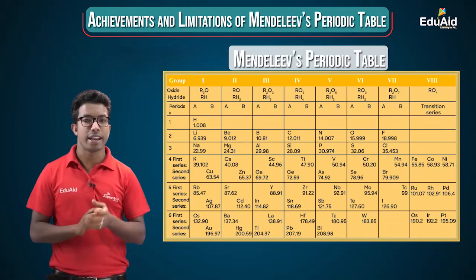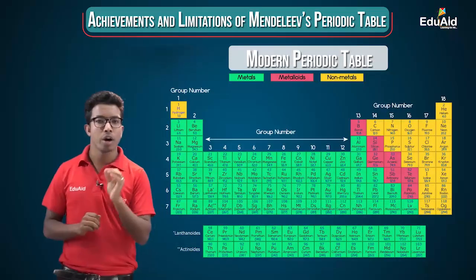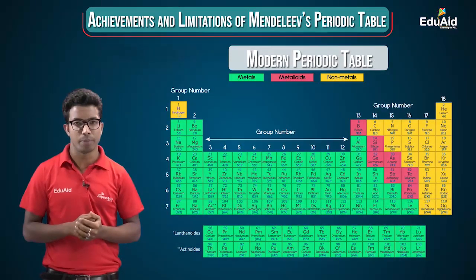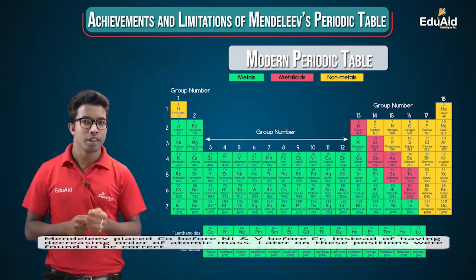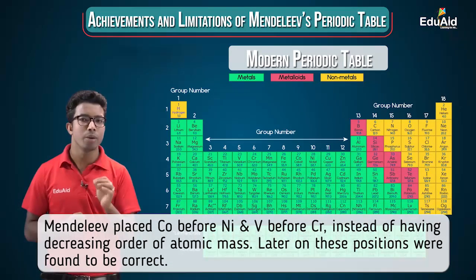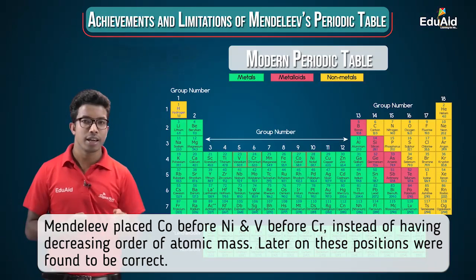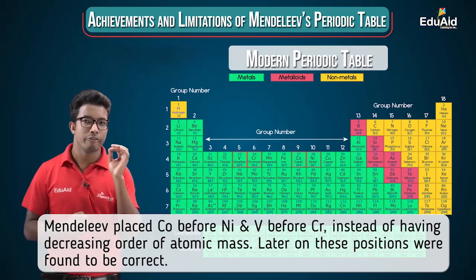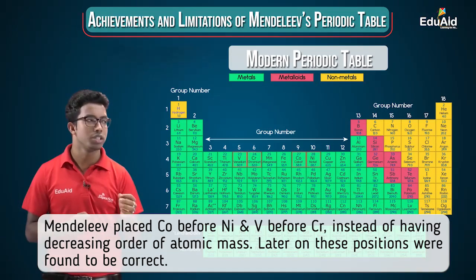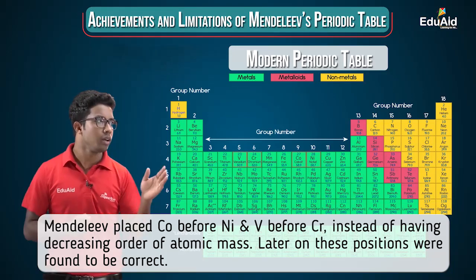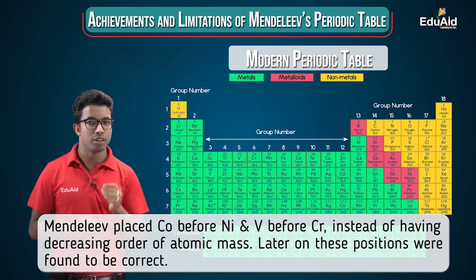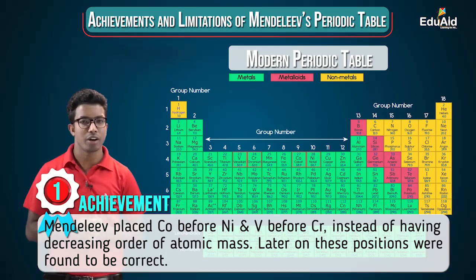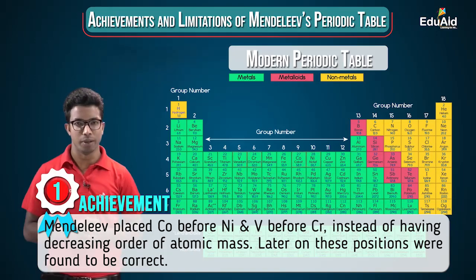The next table prepared was the modern periodic table, and it was observed that the positions given by Mendeleev to cobalt, nickel, vanadium, and chromium were correct. He was very precise in giving positions to these elements. This is considered an achievement of Mendeleev's periodic table.